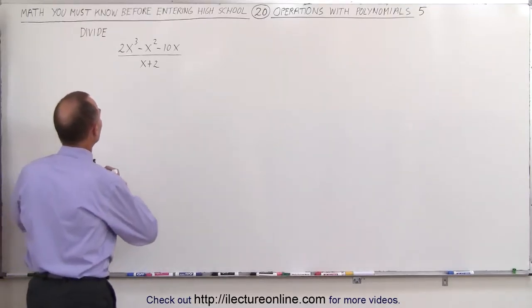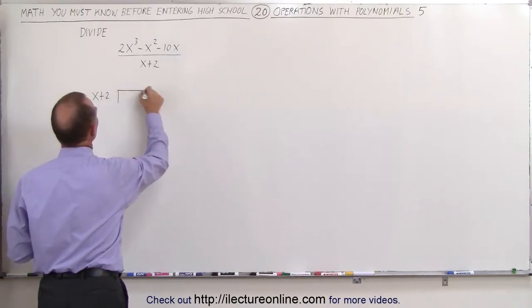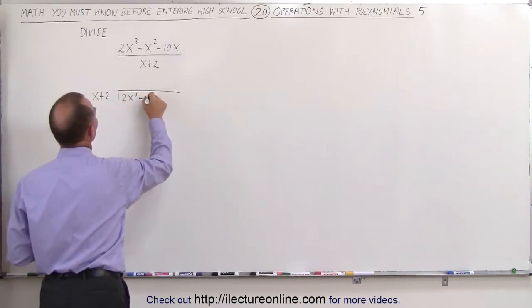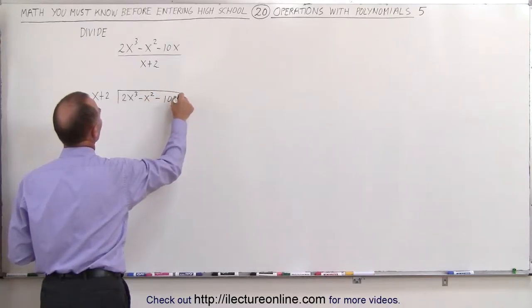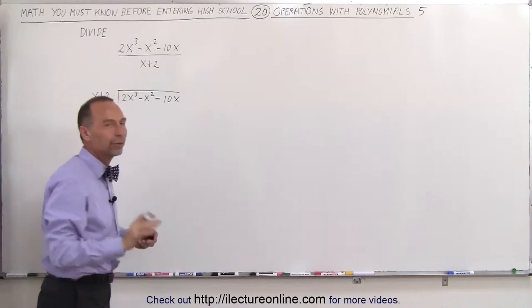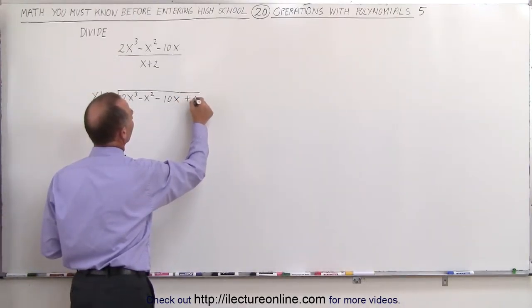So first, what we'll do here is write it as follows. x plus 2 will be divided into the polynomial 2x cubed minus x squared minus 10x. Notice there's no terms missing except for the last term over there, and we'll take care of that later, so simply you can think of it as maybe plus 0 here.